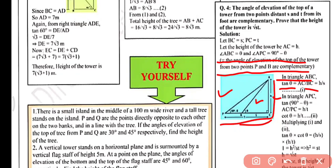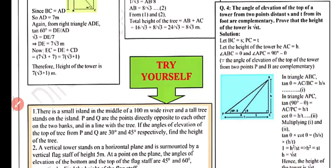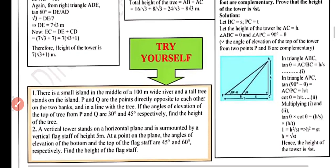Multiplying equations 1 and 2: tan θ × cot θ = (H/S) × (H/T). Since tan θ is the reciprocal of cot θ, their product equals 1. Therefore 1 = H²/(ST), which gives H² = ST, and hence H = √(ST). Thus the height of the tower is √(ST), which is what we needed to prove.